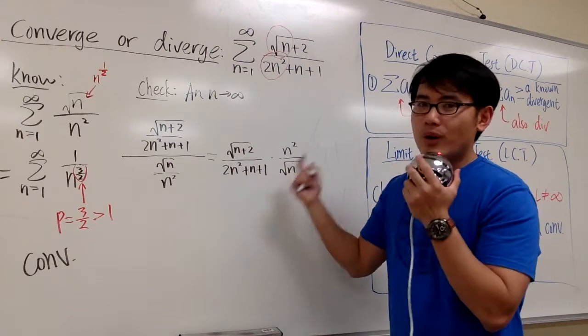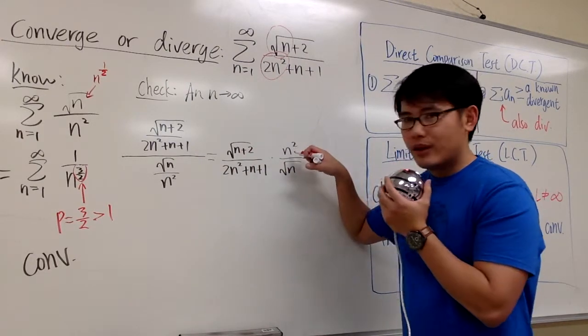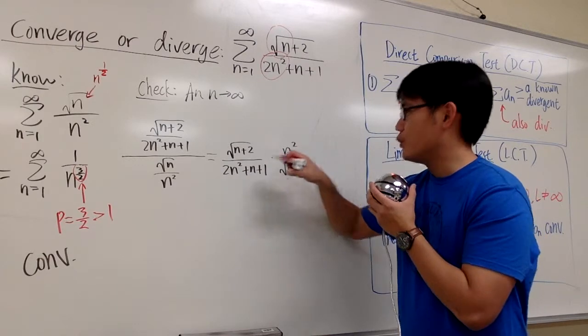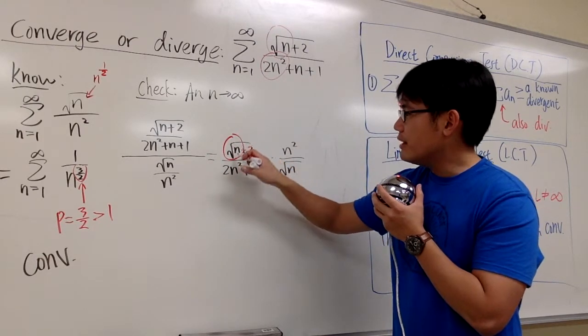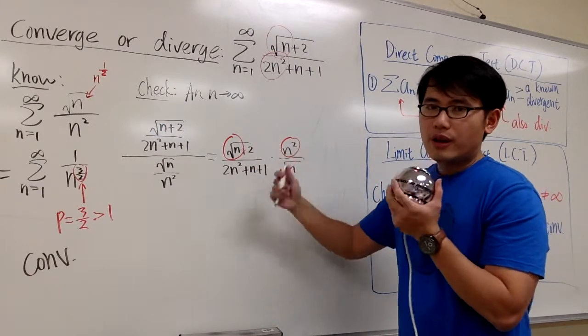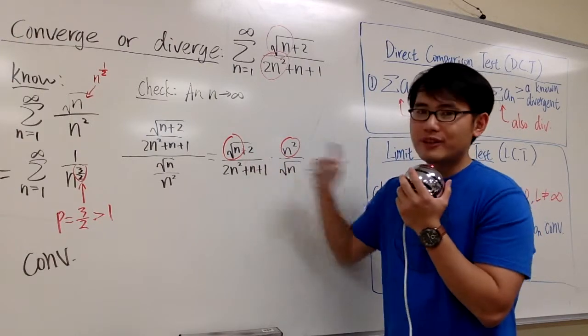To do this, we are going to consider what's the dominating part on the top. Well, it's not just the n squared, because we have to multiply n squared with that. So technically, the square root of n multiplied with n squared, those together is the dominating part.